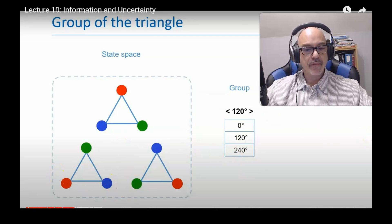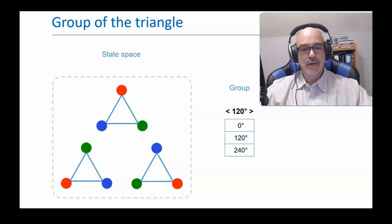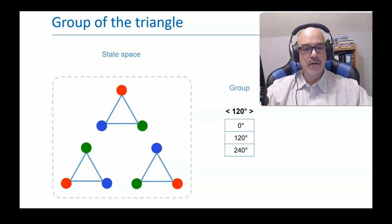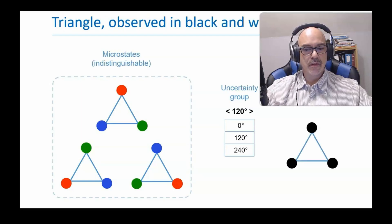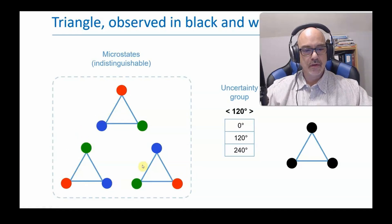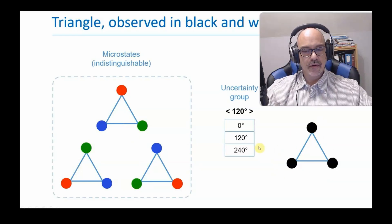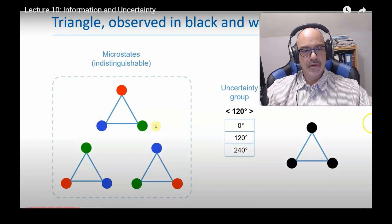We will be very interested in what can and cannot be observed. In this example, we are able to distinguish the three states from one another by the different colors, and so an observation tells us precisely the state of the triangle. But next, let's consider how the state would appear to an observer who sees only in black and white. In this case, the observer can't distinguish the different orientations and perceives only a single macro state, which actually contains the three different microstates.